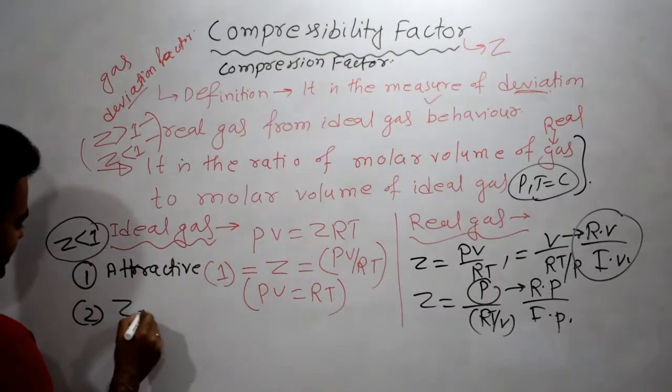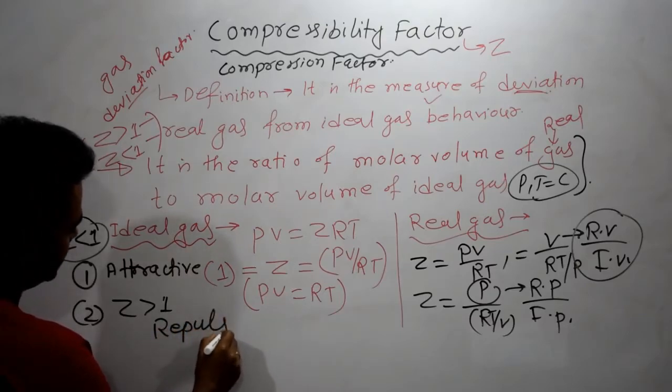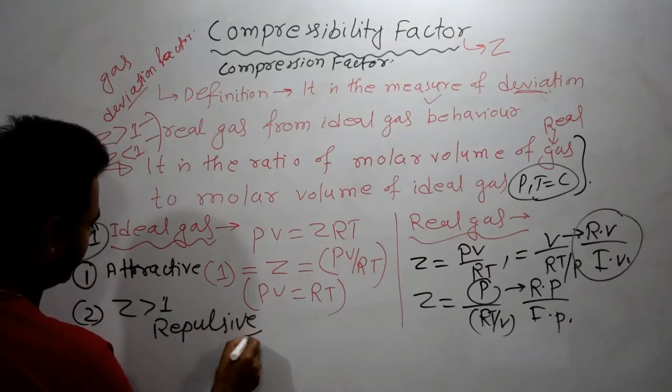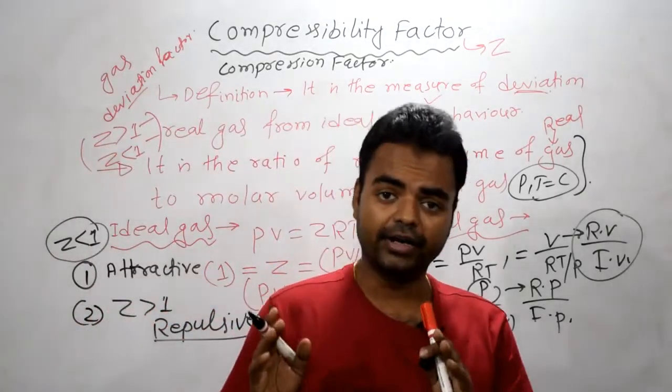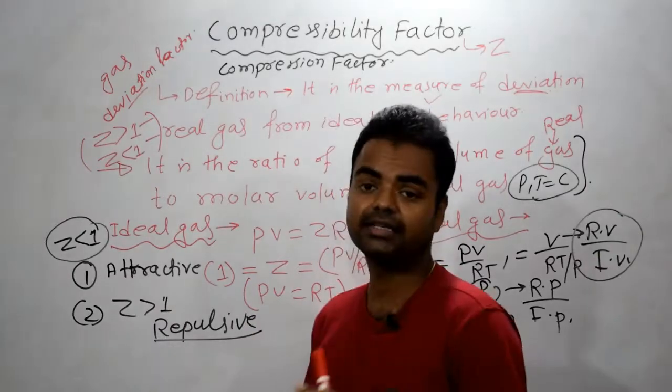Second case, Z is greater than one. Now, here comes into play repulsive forces. If repulsive forces are powerful, then Z is greater than one.